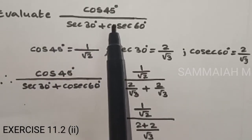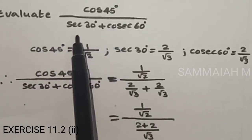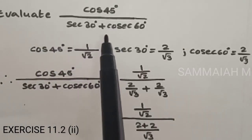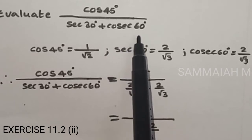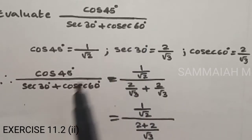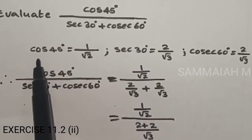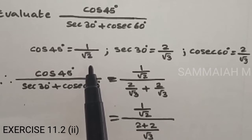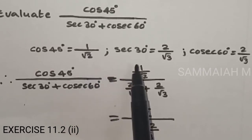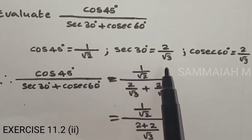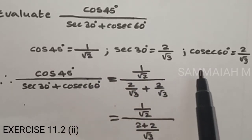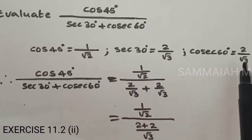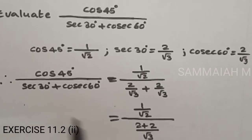Evaluate cos 45 degrees upon secant 30 degrees plus cos 60 degrees. Here cos 45 degrees is equal to 1 by root 2, secant 30 degrees is equal to 2 by root 3, and cos 60 degrees is equal to 1 by 2.